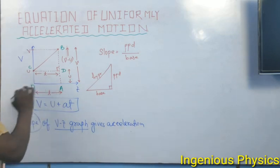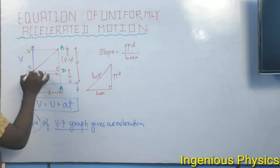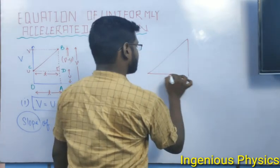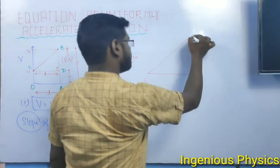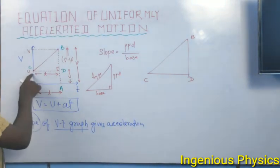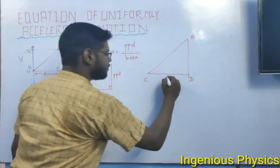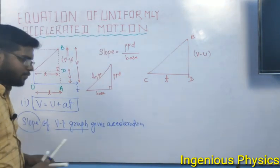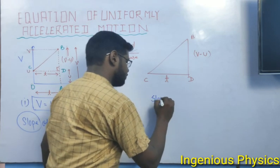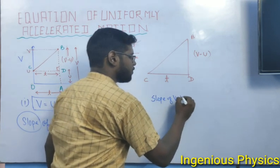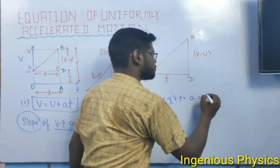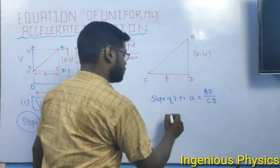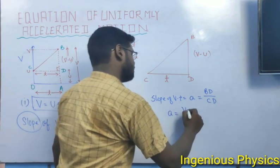Now we look at triangle CDB. C and D form the base, and B is the apex. The slope of the VT graph — using perpendicular divided by base — gives us acceleration. So acceleration equals V minus U divided by T.